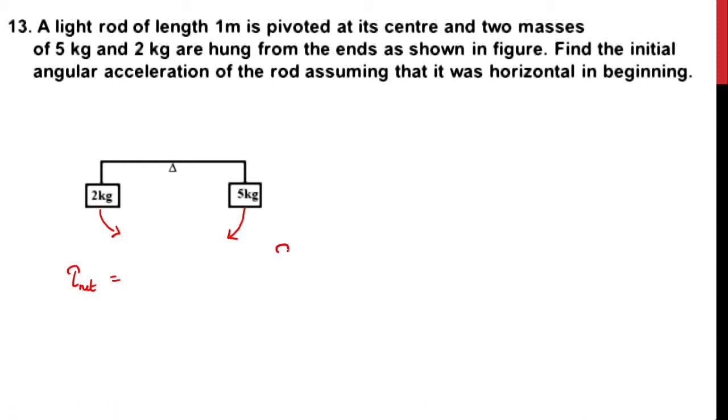As we already learned, torque is equal to force times perpendicular distance. What is the torque due to 5 kg? We can write 5 kg times g (acceleration due to gravity) times the perpendicular distance. That is equal to 1/2 because the total length is 1 meter, so this becomes half a meter and this is also half a meter.